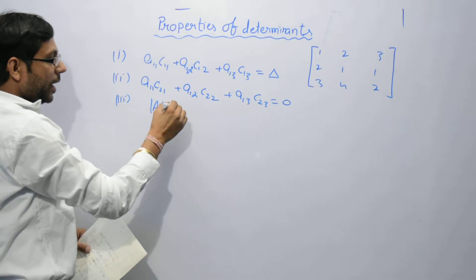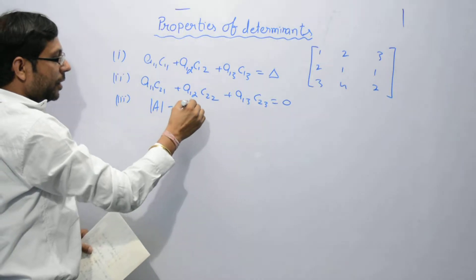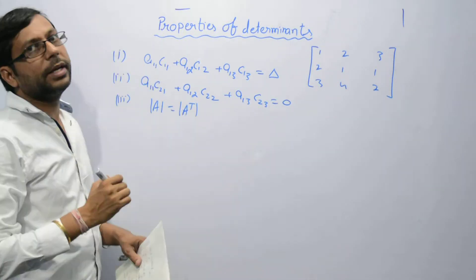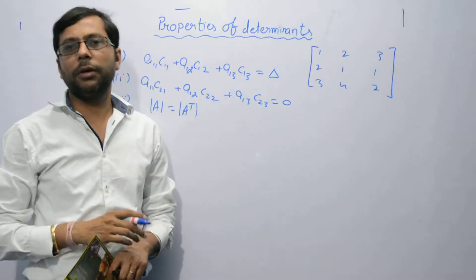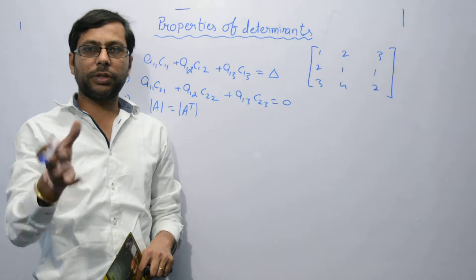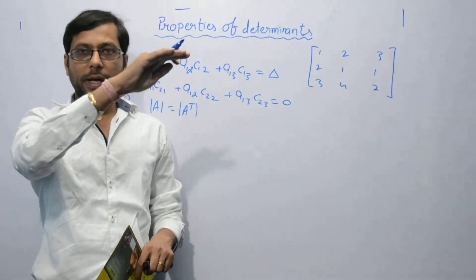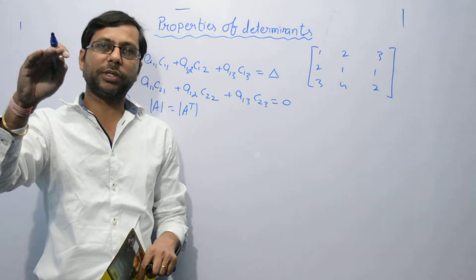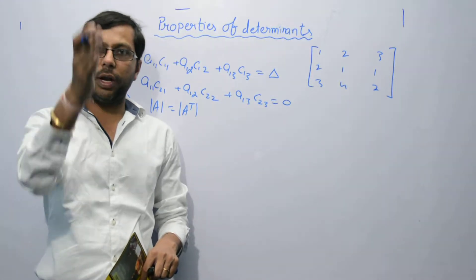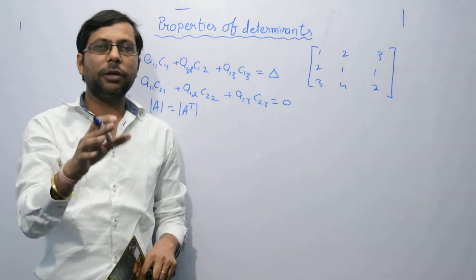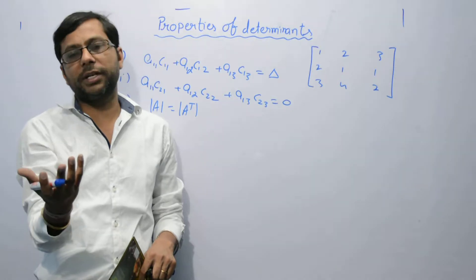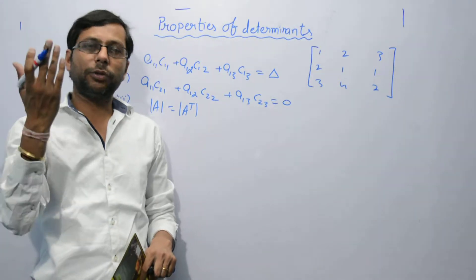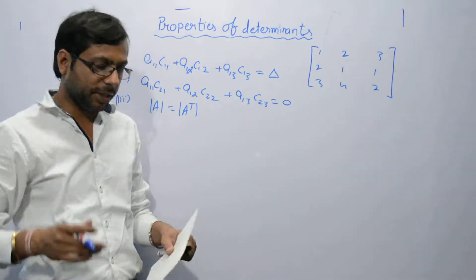The third property is: the determinant of A and the determinant of the transpose of A are the same. Everybody knows that when you transpose a matrix, rows become columns. So it hardly affects the determinant — the determinant remains the same.